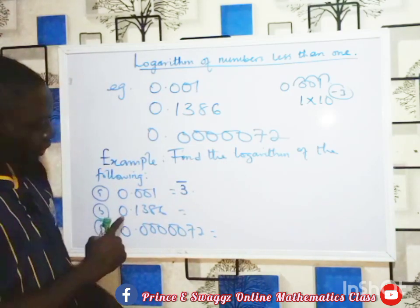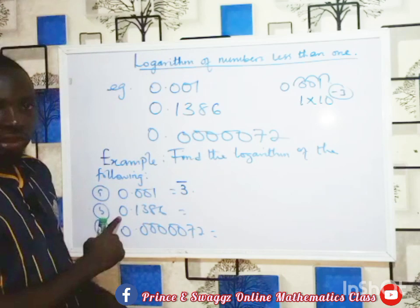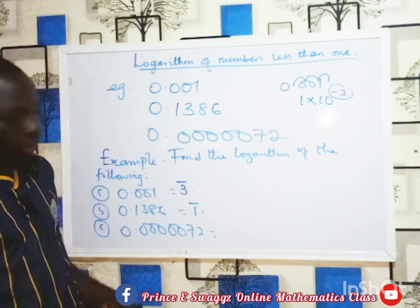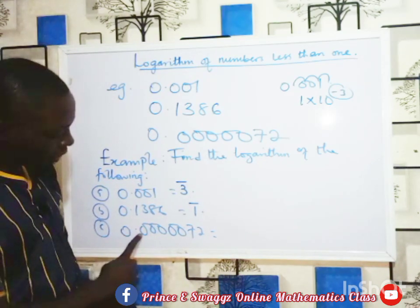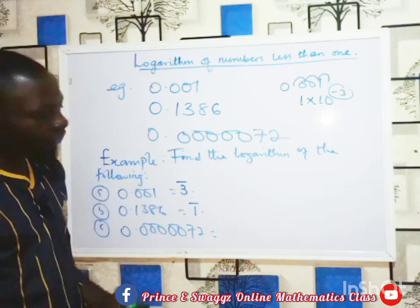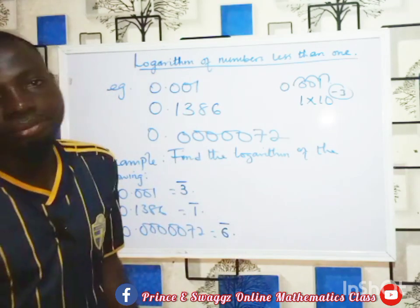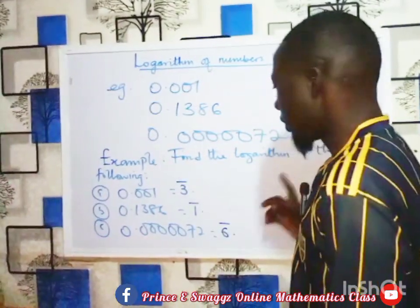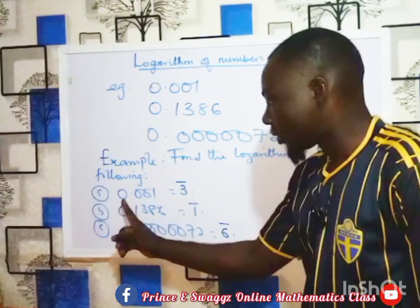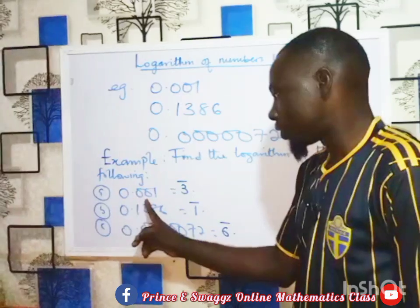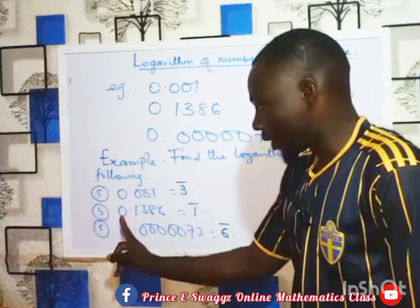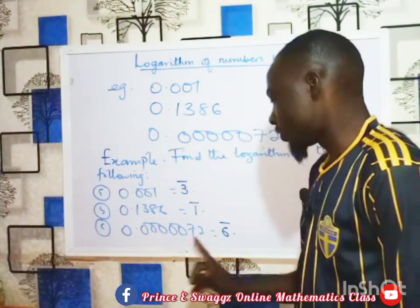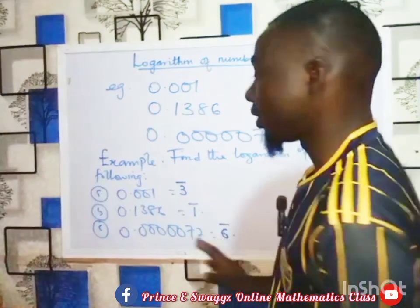For the second number, there is just one zero before the real number, so the integer is bar 1. For the last number 0.000072, counting the zeros gives us six zeros before the real number, so the integer is bar 6. So the integers for our three numbers are: bar 3, bar 1, and bar 6. We are now done with the integers.